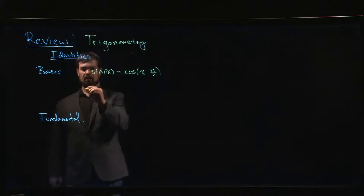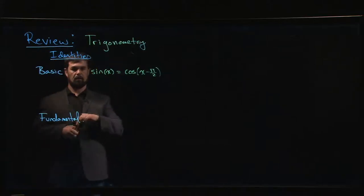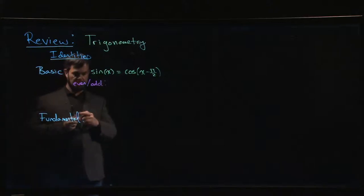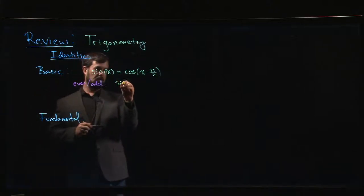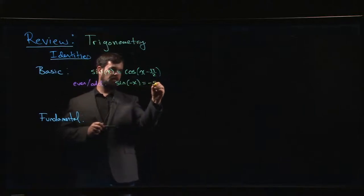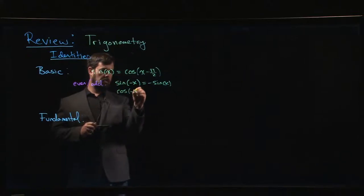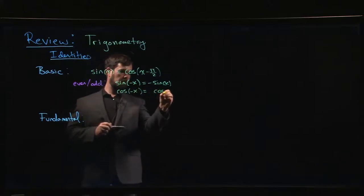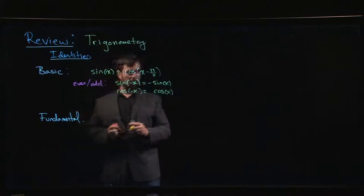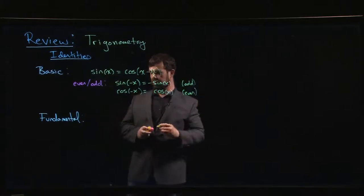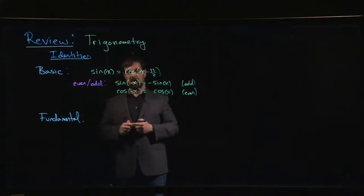We have the even odd identities. So sine of minus x is minus sine x, cos of minus x is plus cos x. So sine is odd, cosine is even. Among the other four trig functions, secant is the only other even one. The other three, tan, cotan, cosecant, they're all odd as well.